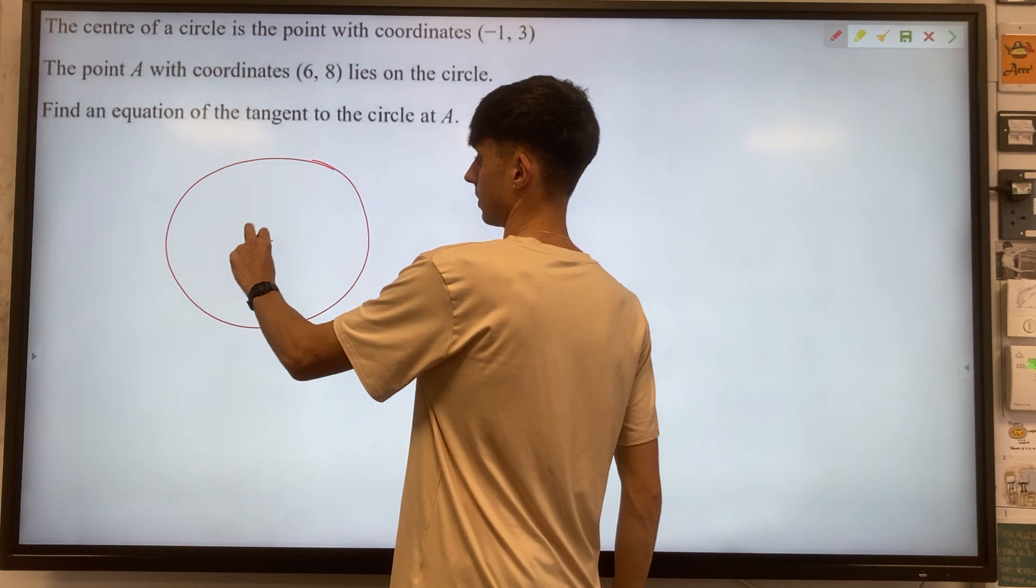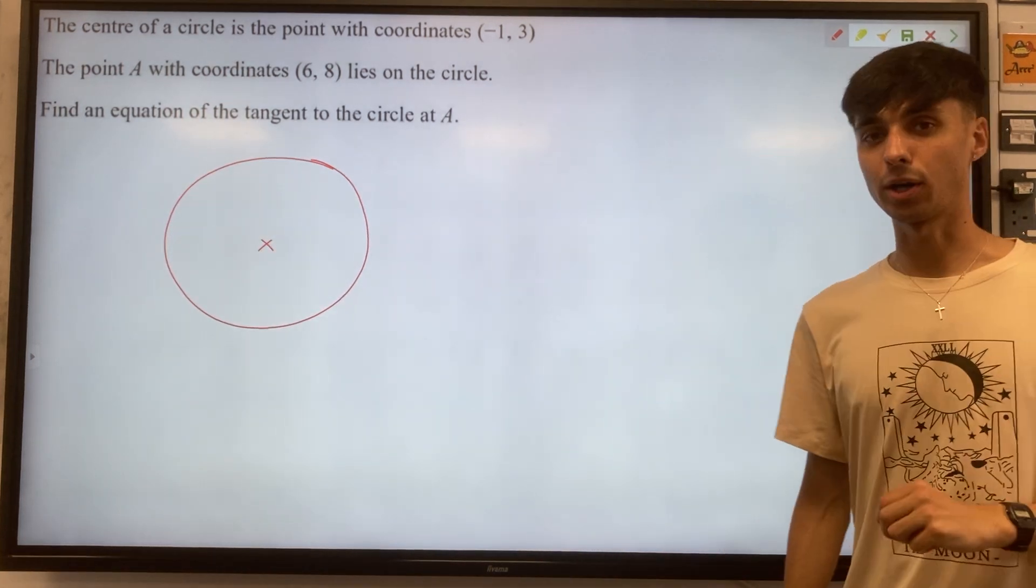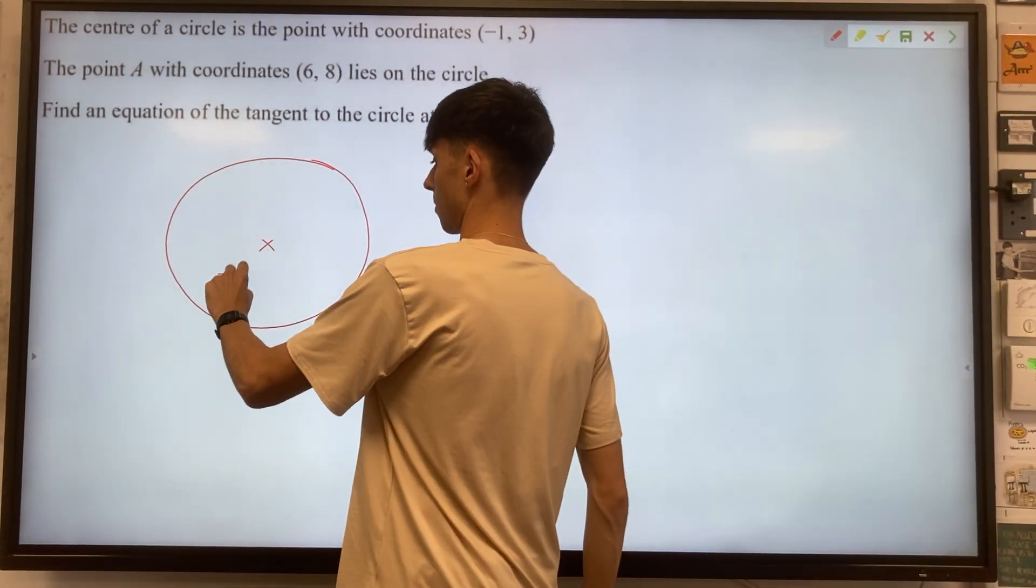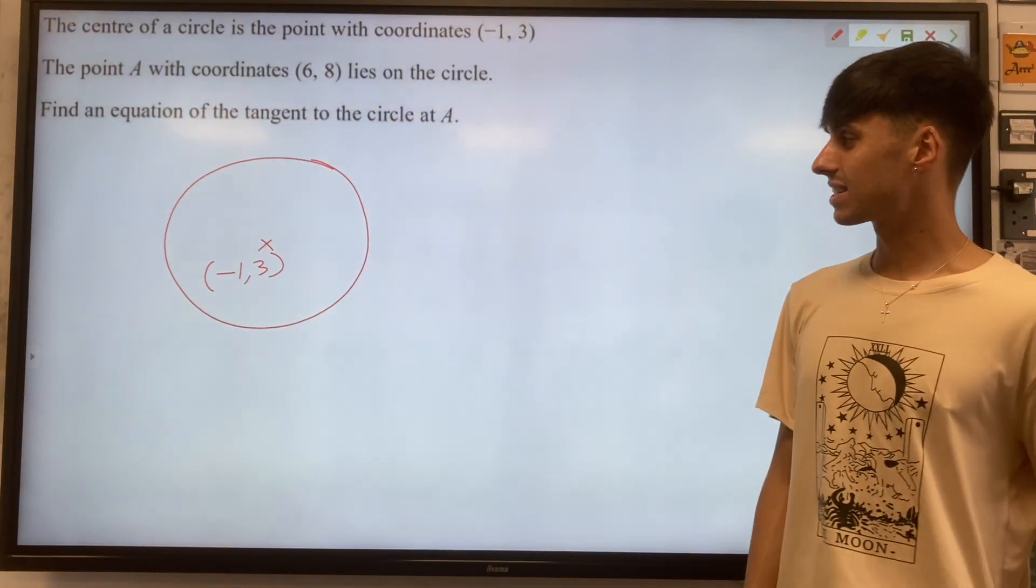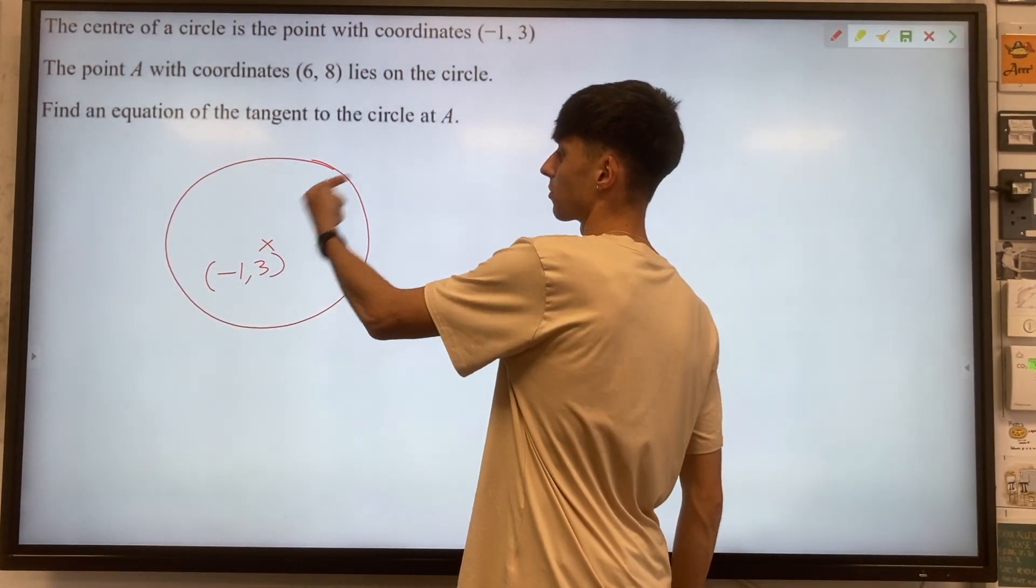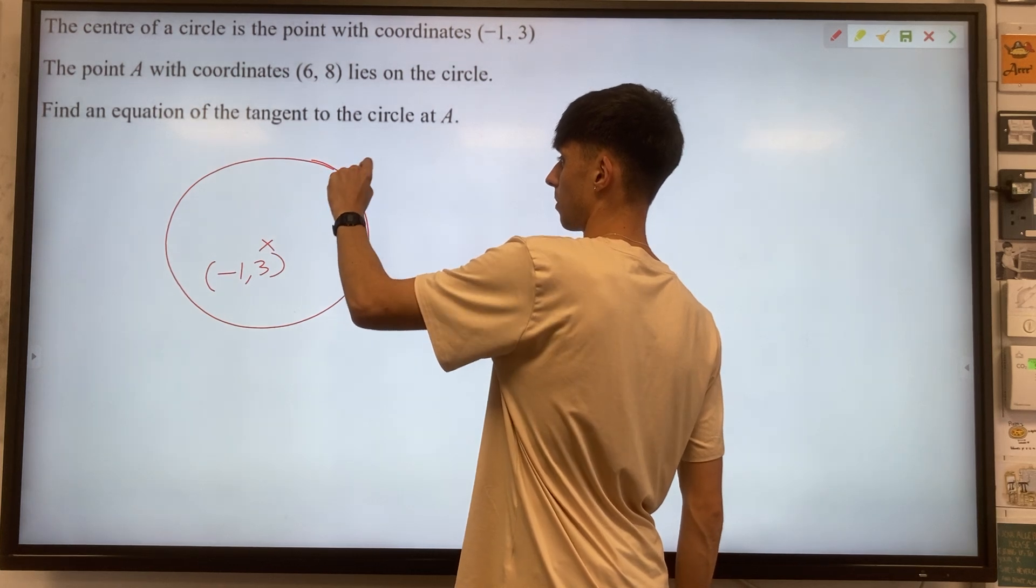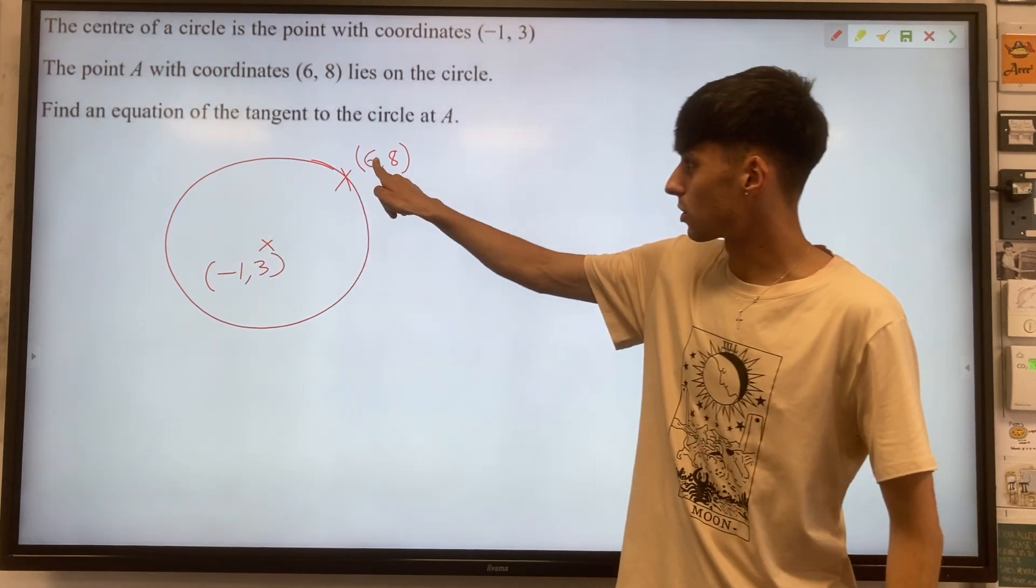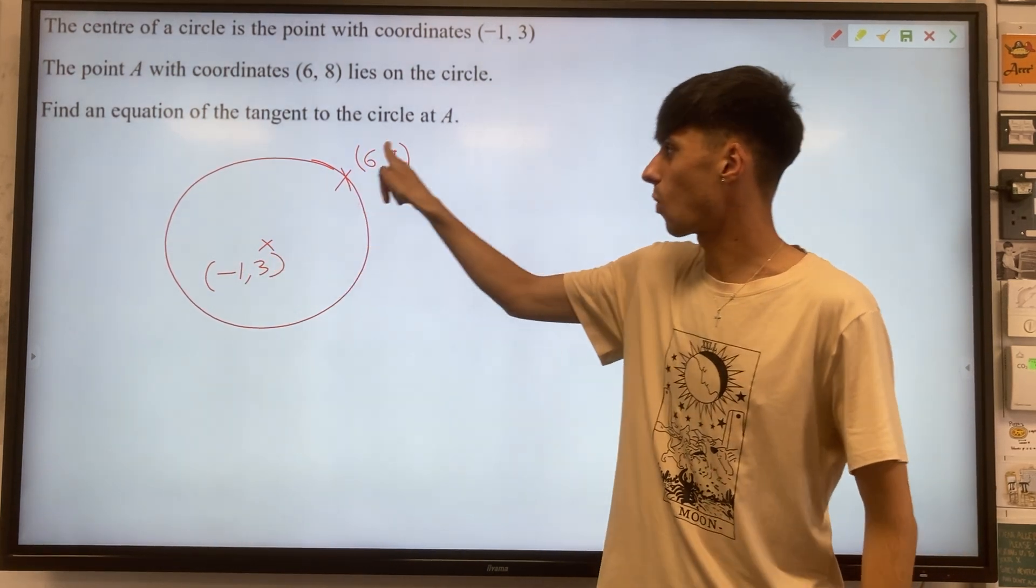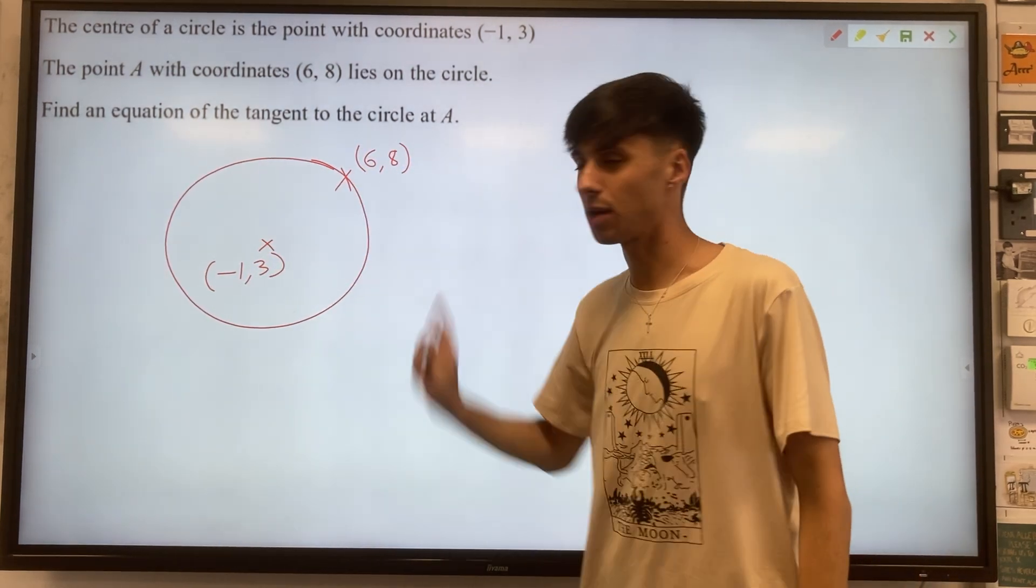So we've got our circle. Centre is at minus 1, 3. Our 6, 8 is going to be somewhere up in this side of the circle. Let's put it up here somewhere. That's because we know the x number is a lot larger and we also know the y number is larger. So somewhere up here for us.